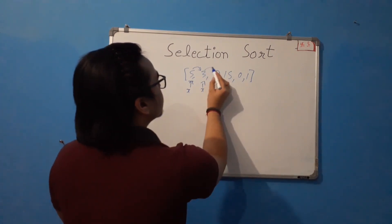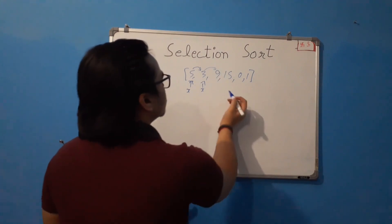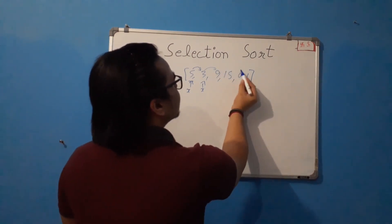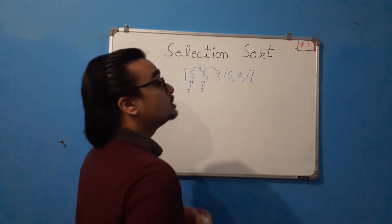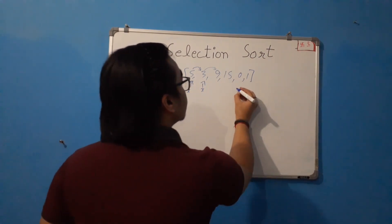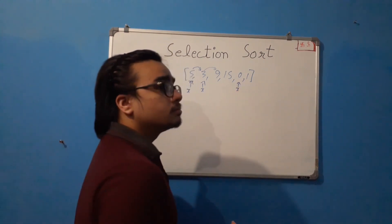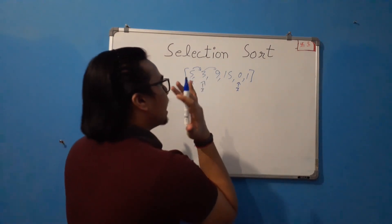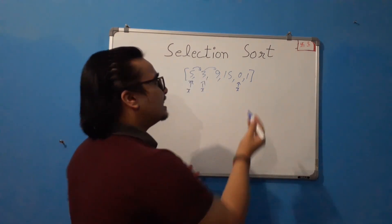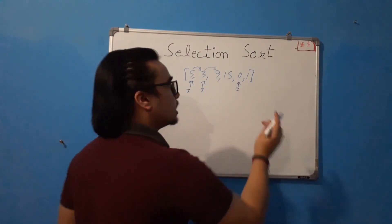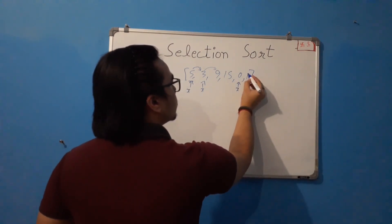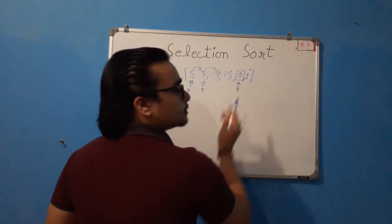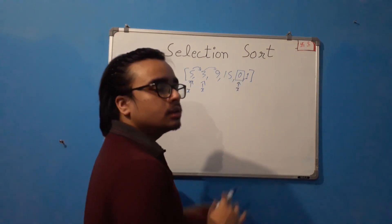Now 3 is compared to 9 — not smaller, so x remains 3. Then it is compared to 15, then to 0. Now 3 is greater than 0, so x becomes 0. The algorithm will select the smallest number first. You can see that 1 is not smaller than 0, so 0 is the smallest number of this list.